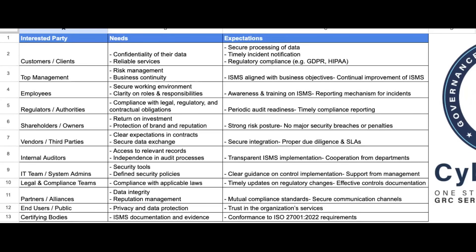When we talk about vendors or third parties, their need is secure data exchange with clear contracts, because if contracts are not clear and roles and responsibilities are not defined, they will have issues. Their expectation is that proper due diligence and SLAs are followed. Also, secure integration of APIs — however you are integrating with the vendor, whether through APIs or access controls, it should be through a secure channel.